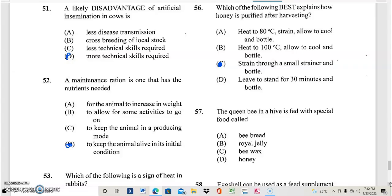Question 57. The queen bee in a hive is fed with special food called? And the answer to 57 is royal jelly.